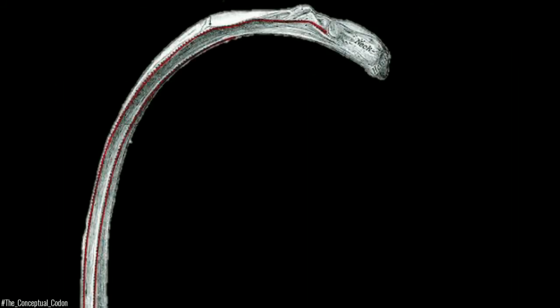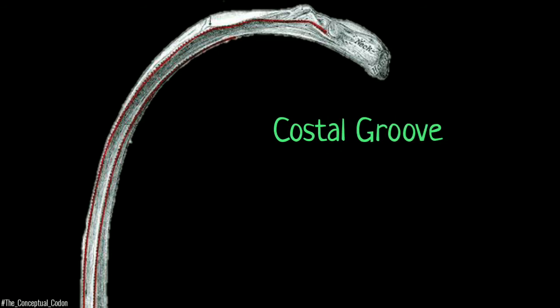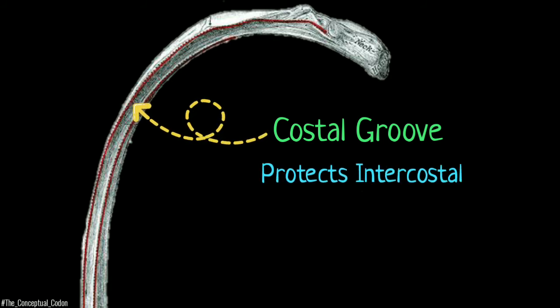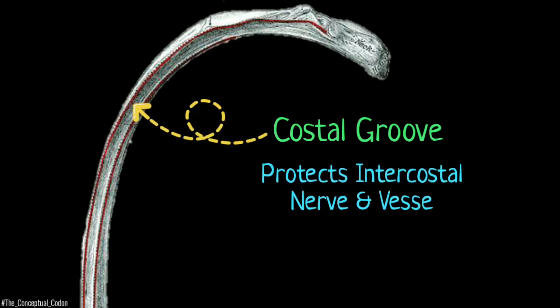The ribs are thickest posteriorly. The sulcus costi, present along the inferior and inner surface of the posterior part of each rib, protects the intercostal nerve and vessels.